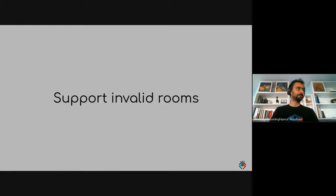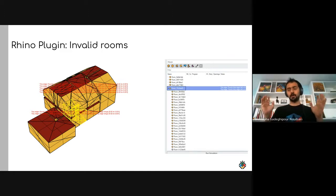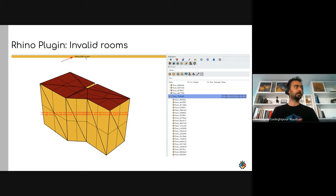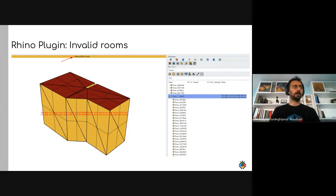Support for invalid rooms was also added. If you have a GBXML file with errors, you no longer need to redraw everything from scratch — you can bring it in, isolate invalid rooms, go to edit mode, and fix them. Notes indicate the specific error, such as a tiny edge or an unclosed zone. Importantly, this approach preserves all metadata — only the geometry is fixed while room-level metadata stays intact.